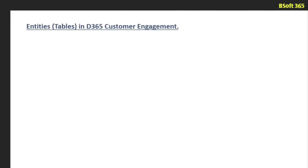Hello everyone. In this tutorial, we are going to see entities in Dynamics 365 Customer Engagement. Entities are renamed as tables now. An entity is a distinct dataset or a group of records. If a user is using the Customer Engagement application and wants to enter some business data, he will create records, and those records will be created in the entity.